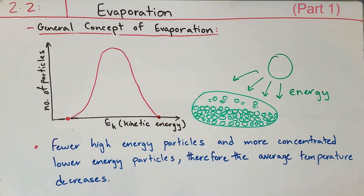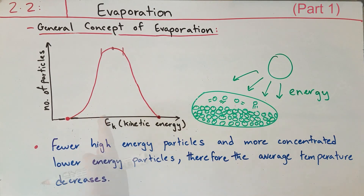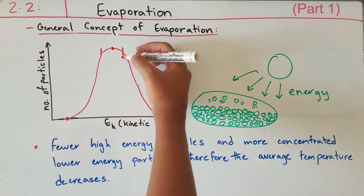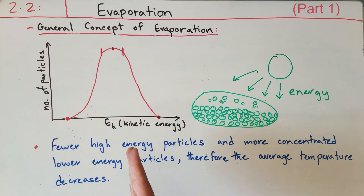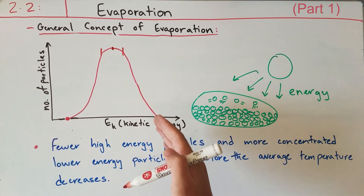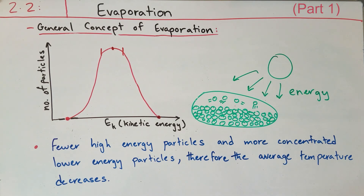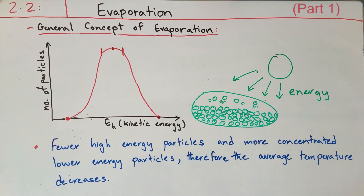By looking at the curve, we can say that the particles behind the median have less kinetic energy. The kinetic energy interval around the median will consist of the highest number of particles. As we move further into the higher kinetic energies, the number of particles will decrease, as fewer particles will have greater kinetic energies, until eventually we approach the particle with the greatest kinetic energy, and that will be the only particle.